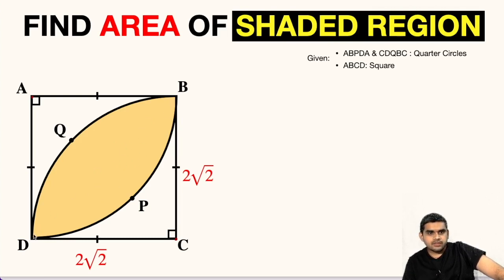In order to solve this question, we will do one construction here. Let us join B and D. So BD is the diagonal of ABCD. This diagonal divides this square into 2 identical triangles. If we see this shaded region, this diagonal has divided this shaded region also into 2 identical areas.